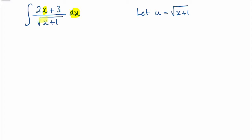We've already dealt with the square root of x plus 1 because that is now u. If I square both sides I will get u squared equals x plus 1. I can rearrange this to get that x is equal to u squared minus 1.